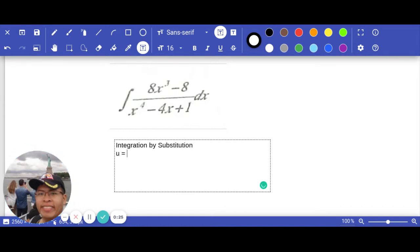So we put u equals to s to the power of 4 minus 4s plus 1. If we do the first derivative for both sides, you will get du equals to 4s to the power of 3 minus 4 dx.